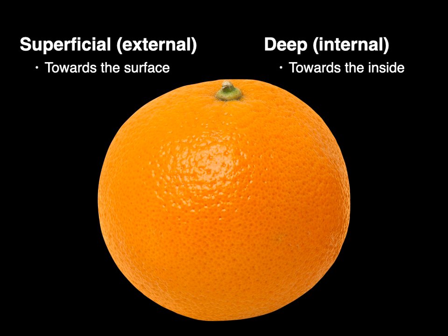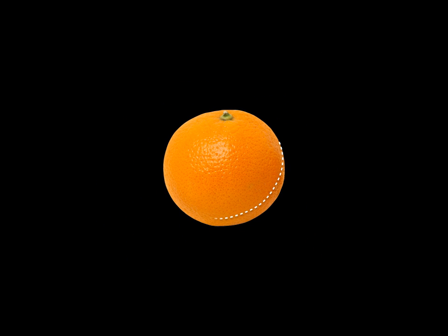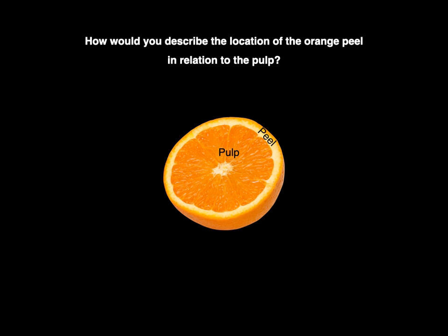Well, to show that, let's use an orange. If we take an incision all around and open up the orange, we show that that's the peel and that's the pulp. We ask the question: how would you describe the location of the orange peel in relation to the pulp?